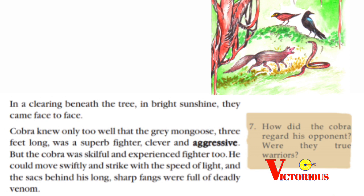In a clear bend of the tree, in bright sunshine, they came face to face. The cobra knew only too well that the gray mongoose, three feet long, was a superb fighter — clever and aggressive. But the cobra was a skillful and experienced fighter too. He could move swiftly and strike with the speed of light, and the sacs behind his long sharp fangs were full of deadly venom.